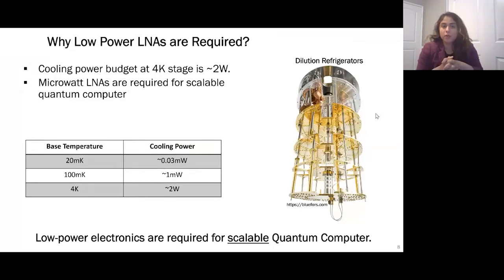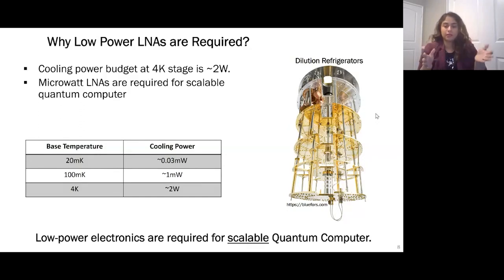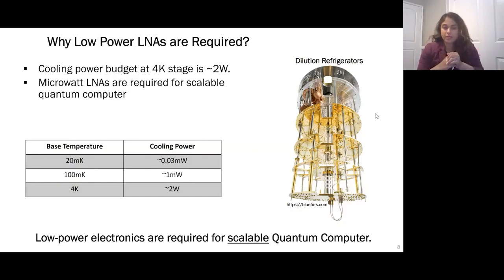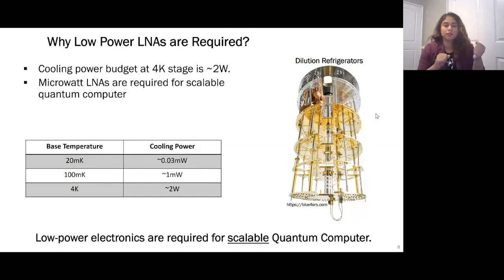So why do we need low-power LNAs? We cool down these devices in dilution fridges which have a limited power budget at the 4 Kelvin stage — around 2 watts. Typically, the HEMT-based LNAs used right now dissipate around 4–5 milliwatts. So if we want to fit 100,000 of them inside a 4 Kelvin stage, we need to bring down the power dissipation by an order of magnitude, to the microwatt level.